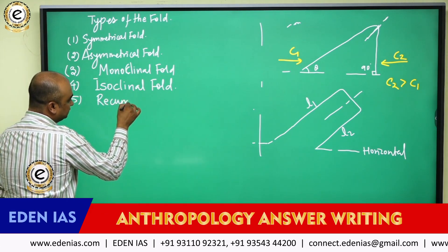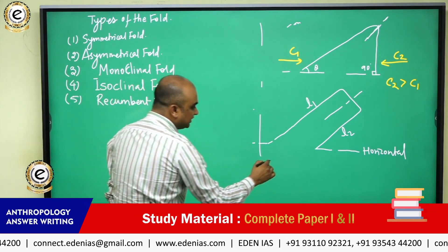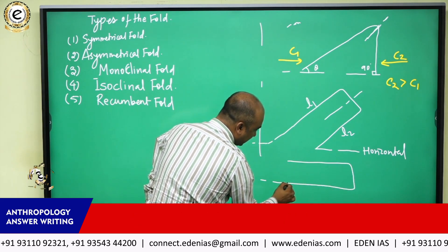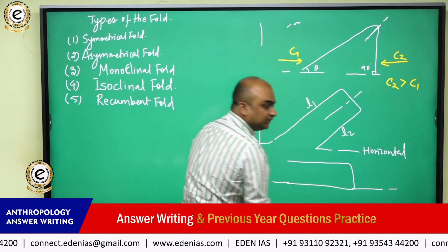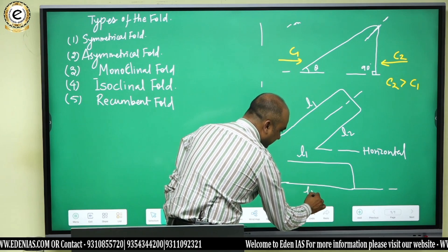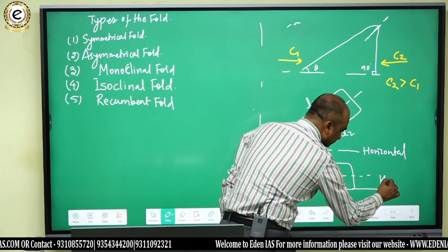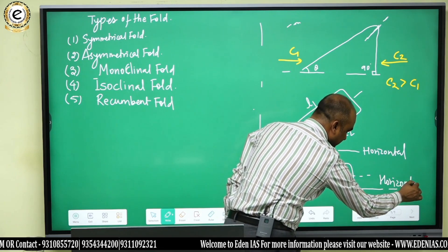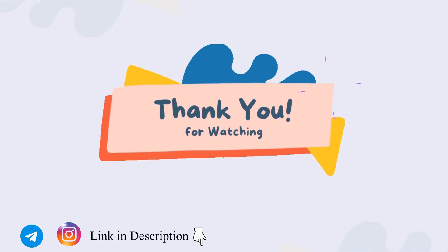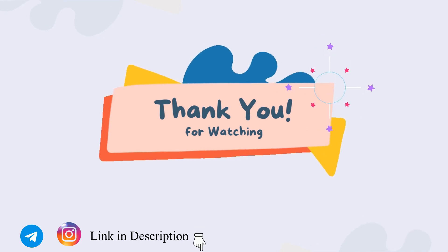Recumbent fold — When both the limbs are not only parallel to each other but are also parallel to the horizontal, that type of fold is known as a recumbent fold. This is L1, this is L2, and this is the axial plane, which lies along the horizontal.